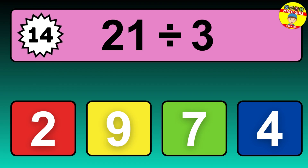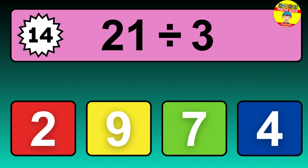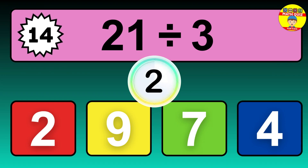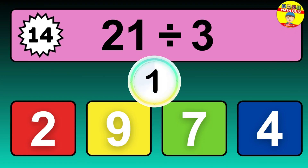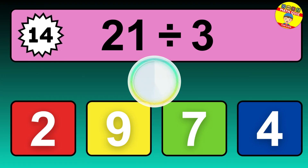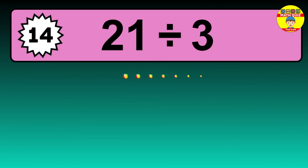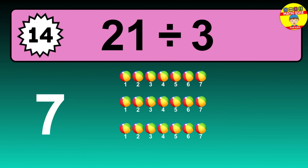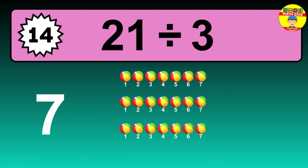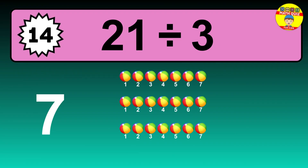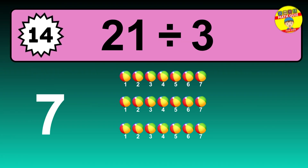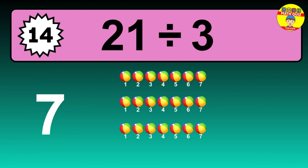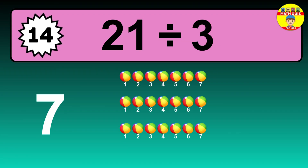What is 21 divided by 3? Picture this — you have 21 objects to divide into groups of 3. How many groups can you make? Let's think about it. Ready to find out? Let's break it down. Let's imagine you have 21 objects. Can you picture them lined up?